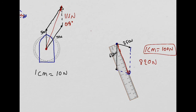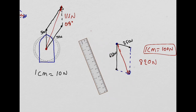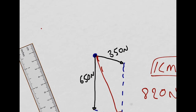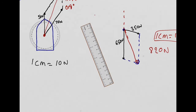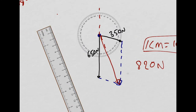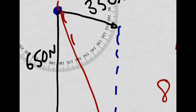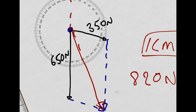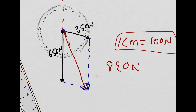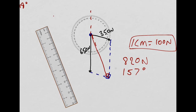For the direction — remember, it's the direction from north. I'll draw my north line there and move the protractor over. You can see that it's about 157 degrees, so the bearing is 157 degrees.